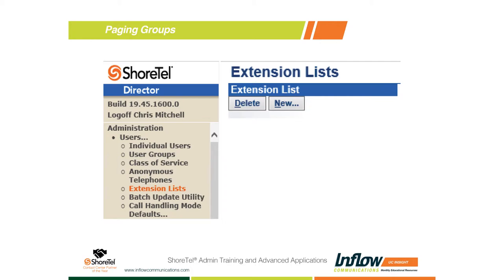The first part is building an extension list. An extension list is simply a named list of users — you create it, name it, and put the users into it. Other uses for extension lists include auto attendants: for example, if you want pressing 1 for a dial-by-name directory at the Portland location to only show Portland employees, you create an extension list with those employees. You can also use extension lists to exclude executives from the dial-by-name directory.